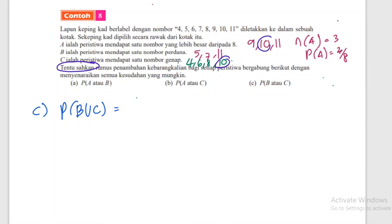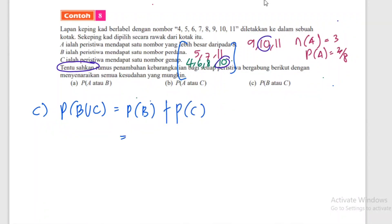Soalan C: kebarangkalian B union C. B = {5,7,11}, C = {4,6,8,10} - tidak ada nombor bersilang. Bila tak ada persilangan, saling eksklusif. Jadi kebarangkalian B union C = kebarangkalian B tambah kebarangkalian C = 3/8 + 4/8 = 7/8.